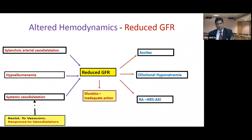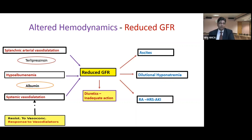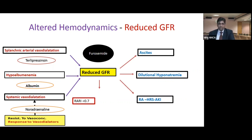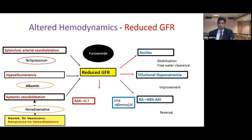Given this pathophysiology, the question is how to alter the dynamics to improve reduced GFR so that diuretics work and ascites, hyponatremia, and HRS can be mobilized. Pharmacologically, 30% albumin and noradrenaline can improve hemodynamics and alter GFR. Once GFR is improved, furosemide can be given to mobilize ascites. Markers of improvement include renal artery resistive index (RARI) less than 0.7 and urine sodium more than 80 mmol/L, which are surrogates for improved GFR and free water clearance, helping to reverse dilutional hyponatremia and HRS.